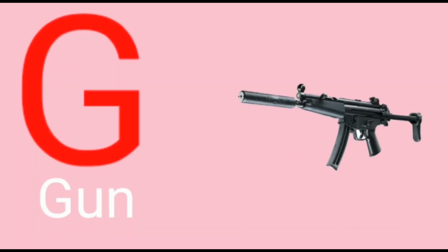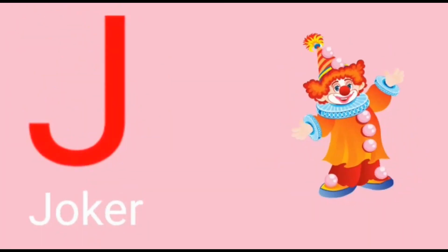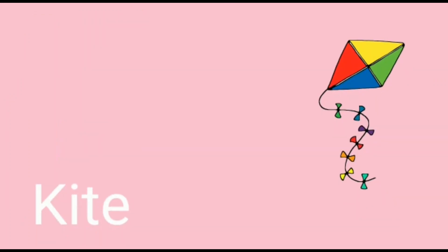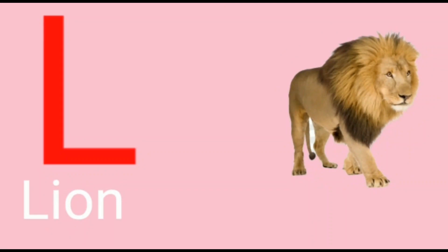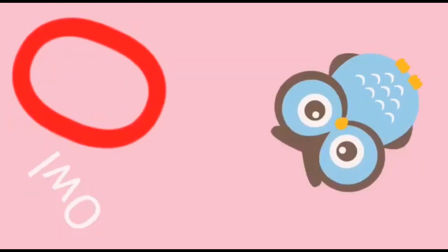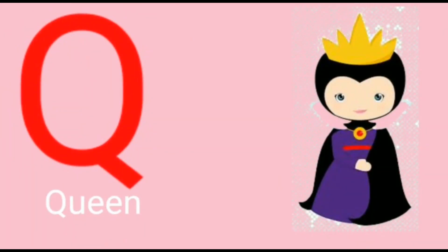G for gun, H for horse, I for ice cream, J for joker, K for kite, L for lion, M for monkey, N for nest, O for owl, P for peacock, Q for queen, R for rose, S for sun.